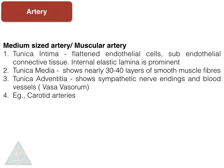The medium-sized artery, or the muscular artery, as the name suggests, has a lot of smooth muscle fibers visible in the tunica media. Tunica intima, as in all blood vessels, is made up of flat endothelial cells, subendothelial connective tissue, and a very prominent internal elastic lamina. Tunica adventitia shows sympathetic nerve endings and blood vessels.